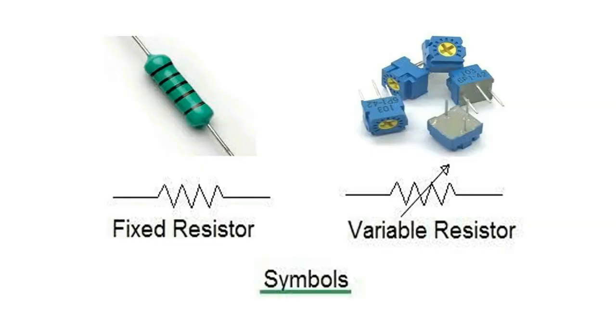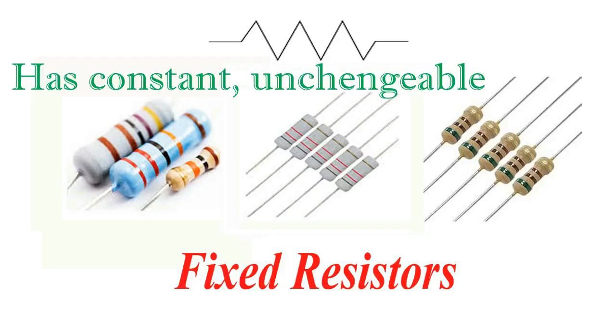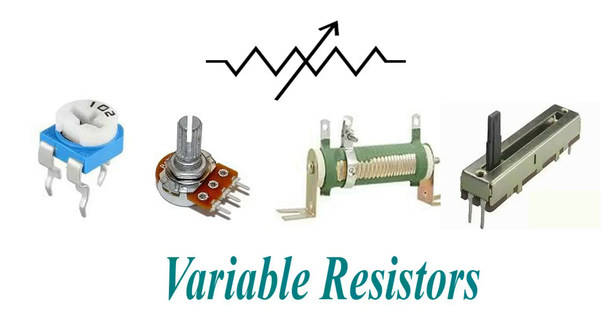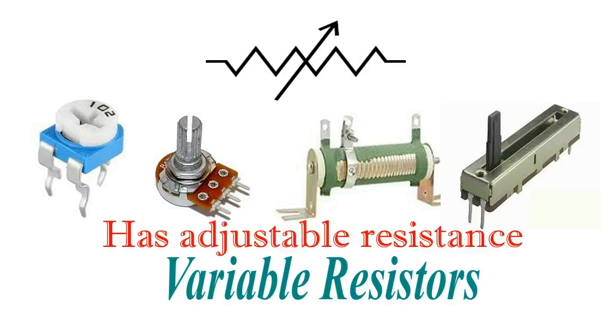The difference between a fixed resistor and a variable resistor is that a fixed resistor has a consistent, unchangeable resistance value, while a variable resistor allows the resistance to be adjusted.